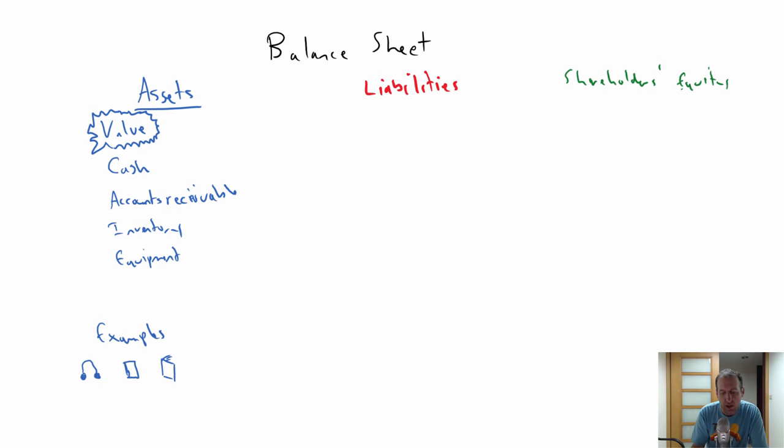Moving over to liabilities. If my one word for asset is value, my one word for liability is owe. So liabilities are owed. They're things that must be paid back.